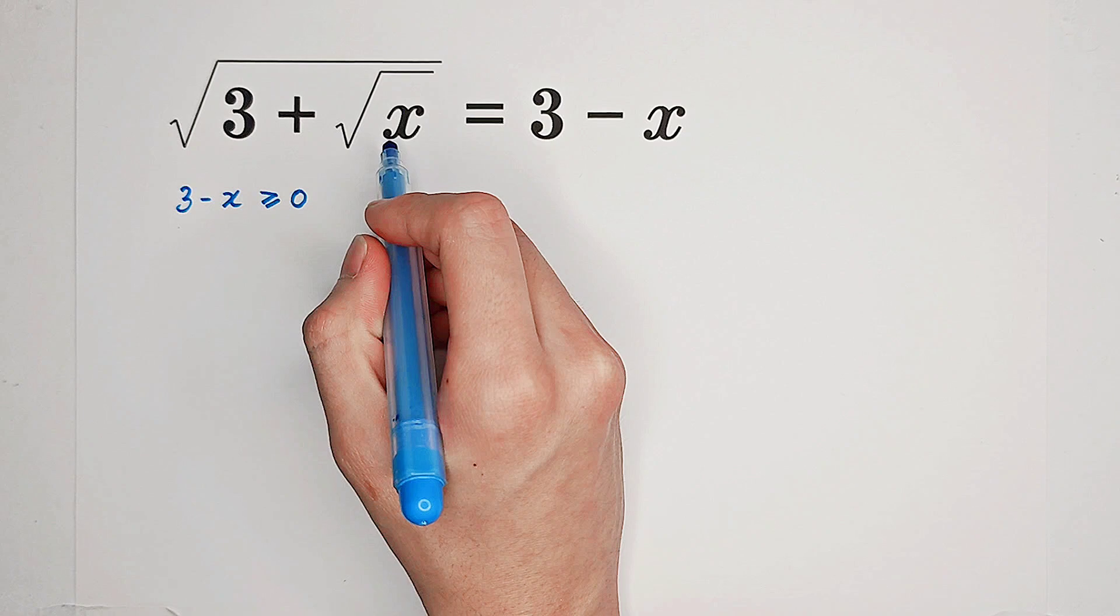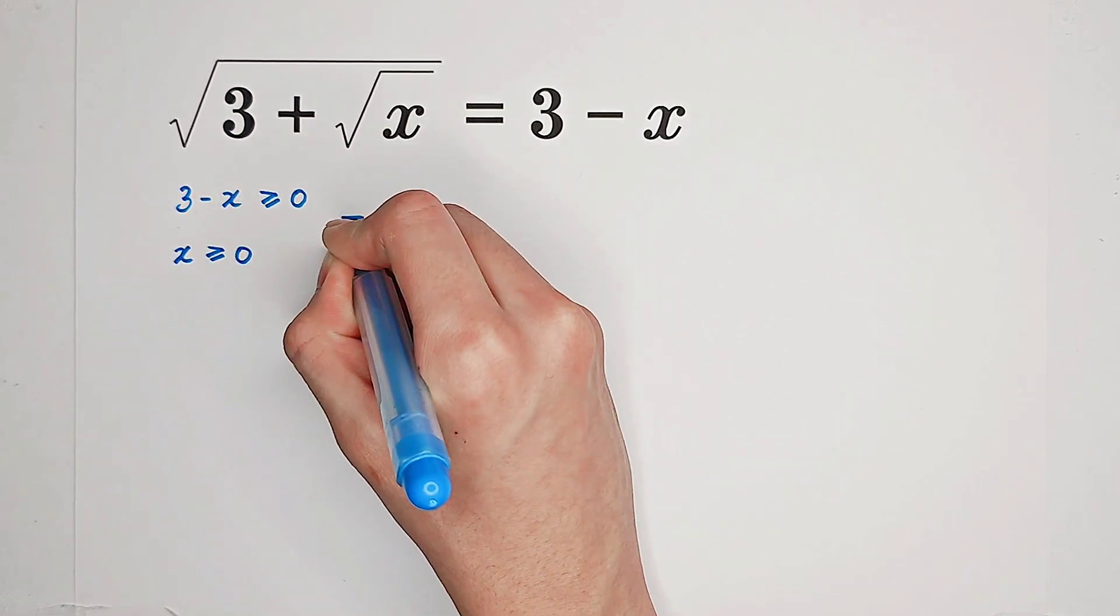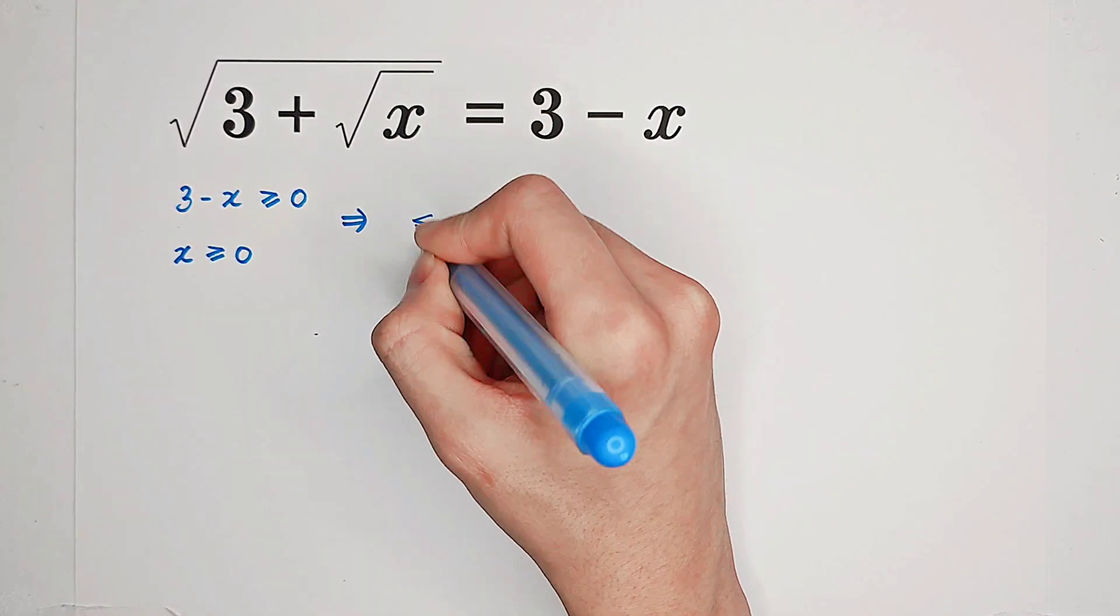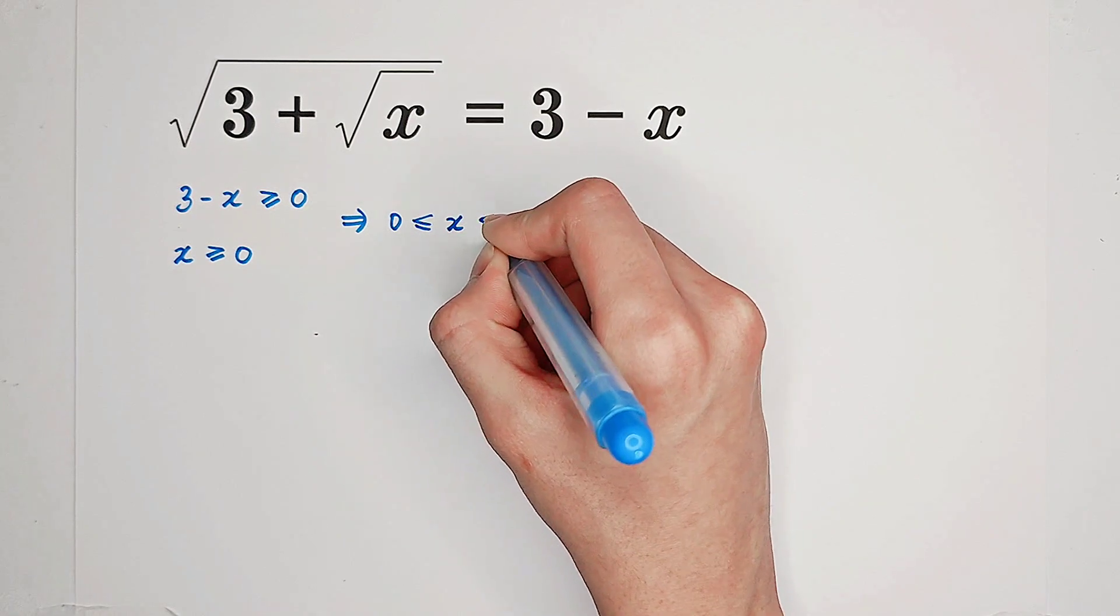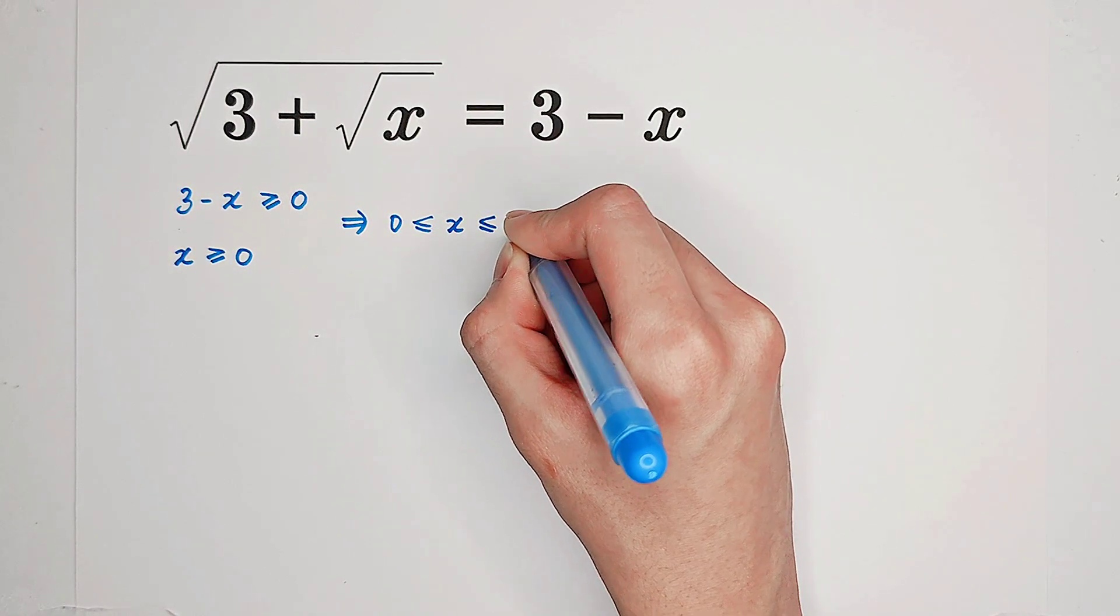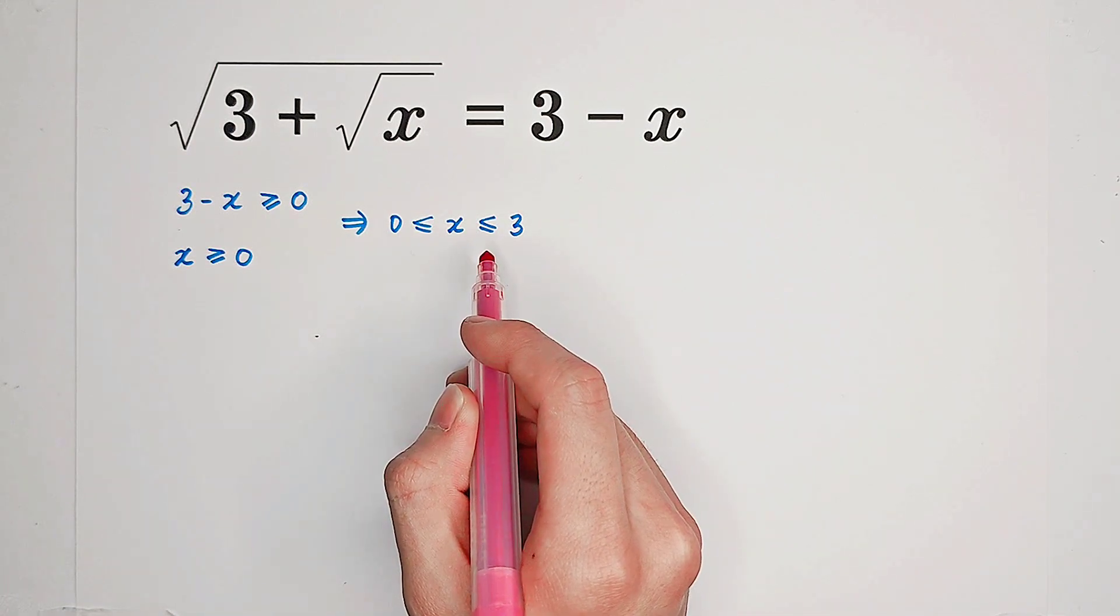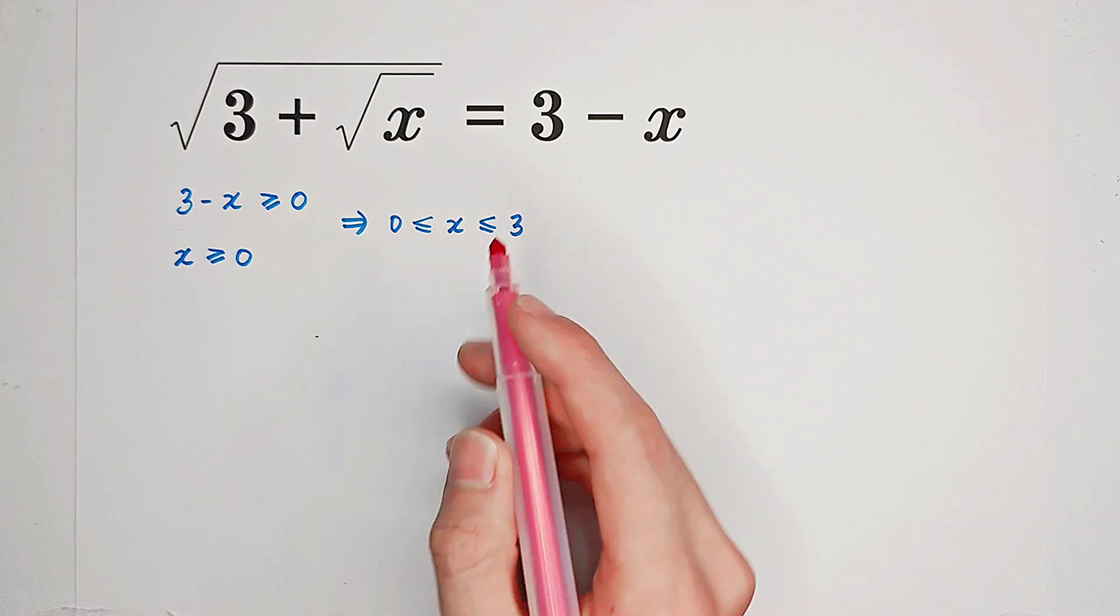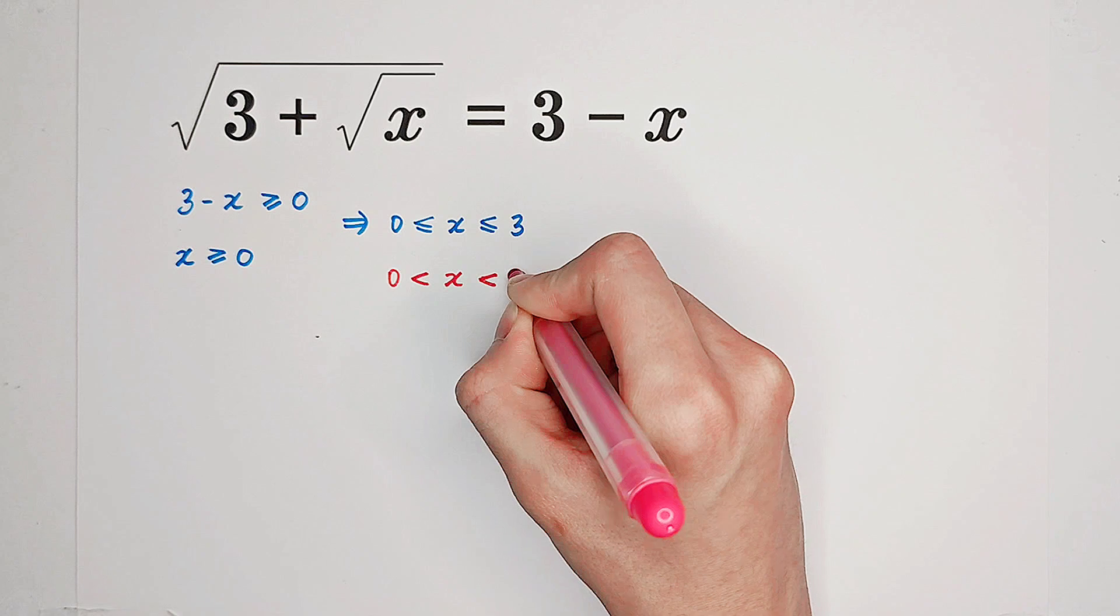And x is also under a square root, so x should also be non-negative. From these two inequalities, we get x should be greater than or equal to 0, and less than or equal to 3 simultaneously. If you check these two endpoints, you can find out that x can neither be 0 nor 3. So, x is actually between 0 and 3.